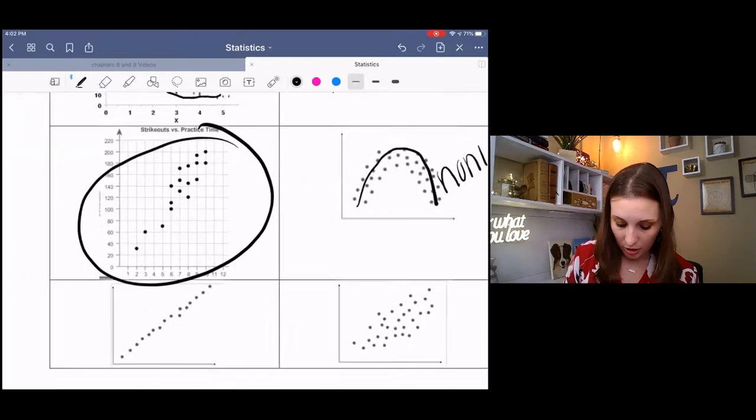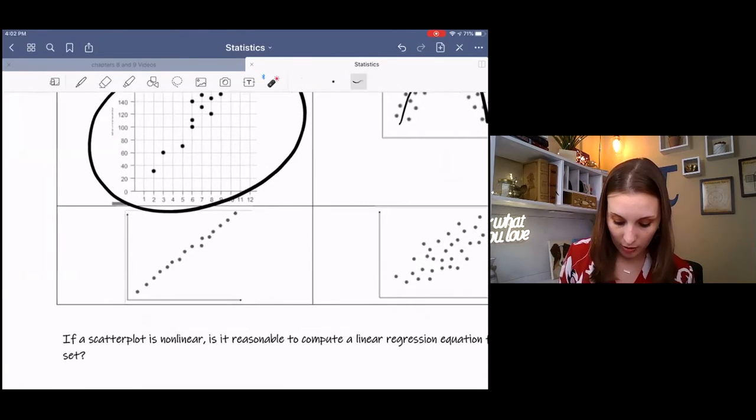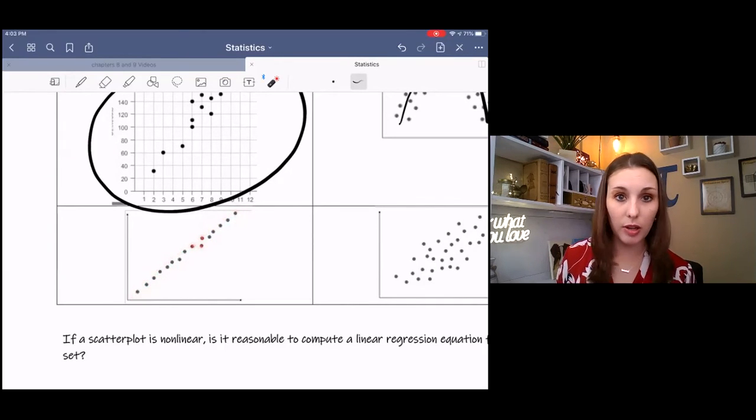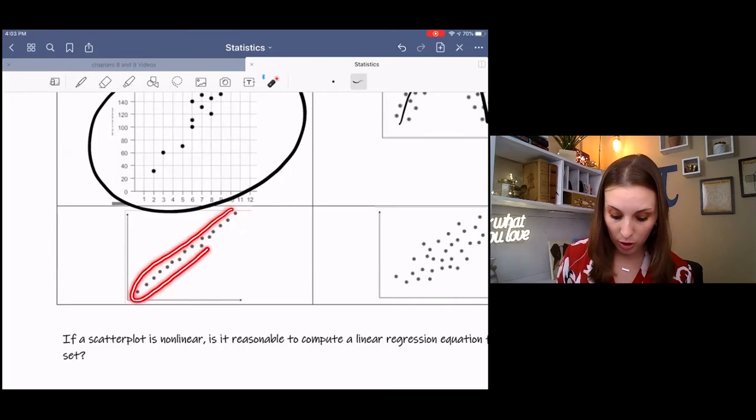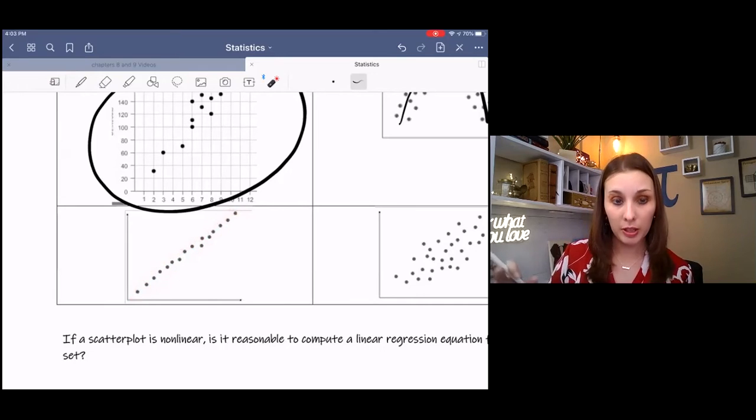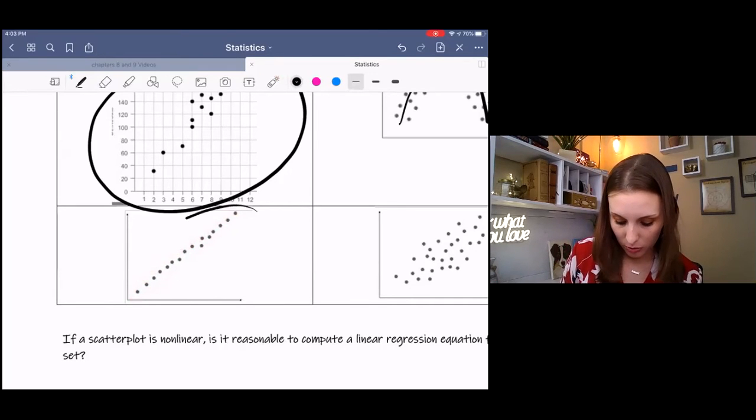This down here is really good. Look how nice all of this follows. We have a couple that are a little out of line there. But for the most part, if we were to circle the majority of our data, it follows a linear trend. So this one's good.